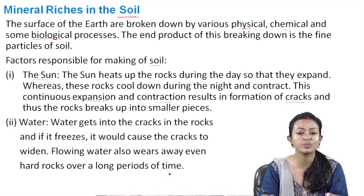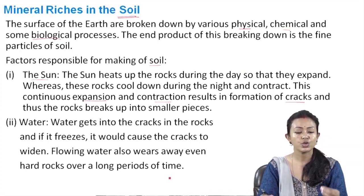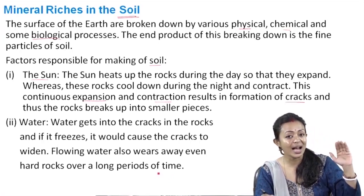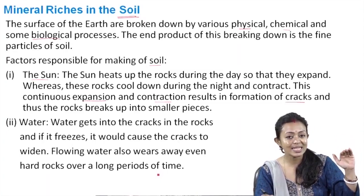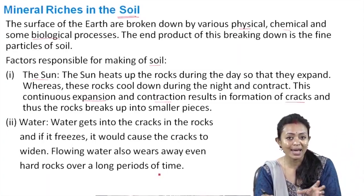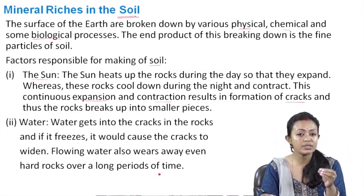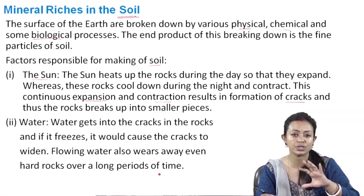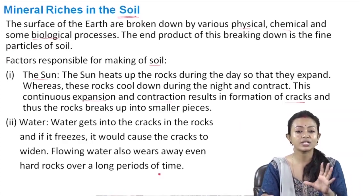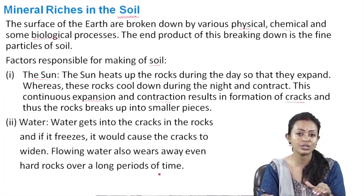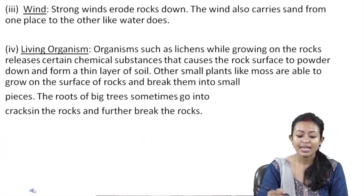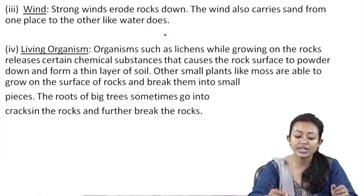Rivers which originate in high mountainous areas carry a lot of silt along with them. These small pebbles, stones, and sand are then deposited in the plains, and we know how much this contributes to the fertility of the land where the deposition takes place.